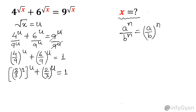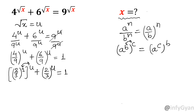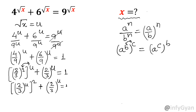Now one property of exponents: a power b power c can be written as a power c power b. We can swap the powers whenever it is required. So this 2 and u will be swapped. I will write 2 over 3 whole power u whole power 2 plus 2 over 3 whole power u equal to 1.